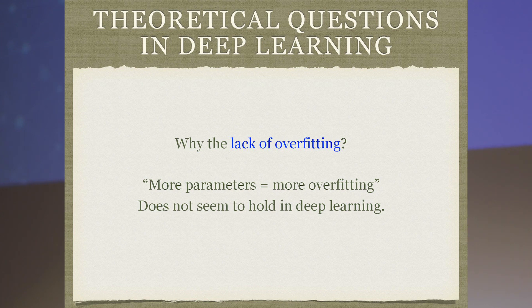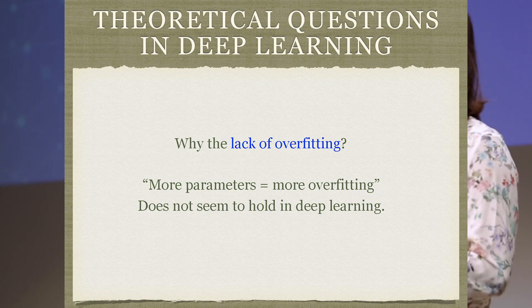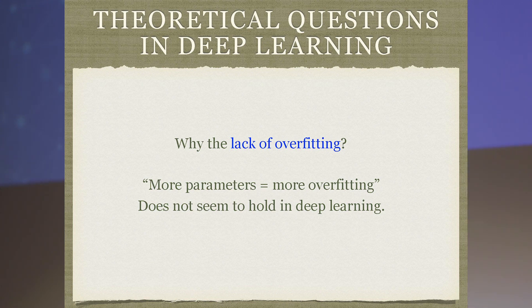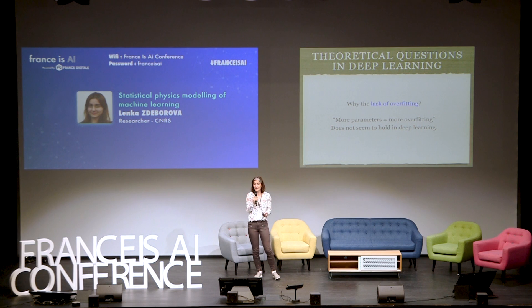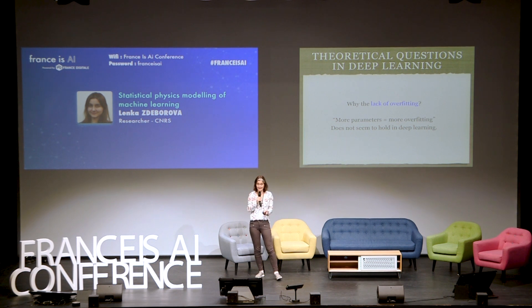Let's jump to today. Today we are discussing deep learning with some of its theoretical challenges, such as why in deep learning we basically don't have overfitting. This is the kind of picture we all learned when fitting a polynomial to a line: if we take too many parameters, the generalization gets worse. But it's not true in deep neural networks — the more parameters we get, the better the generalization gets. So how do we explain that theoretically?